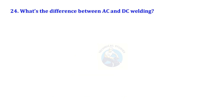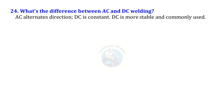What's the difference between AC and DC welding? AC alternates direction while DC is constant. DC is more stable and commonly used.